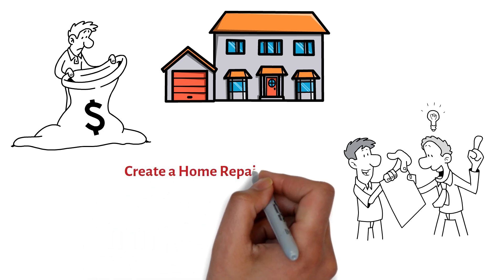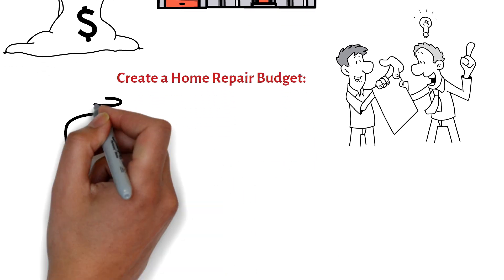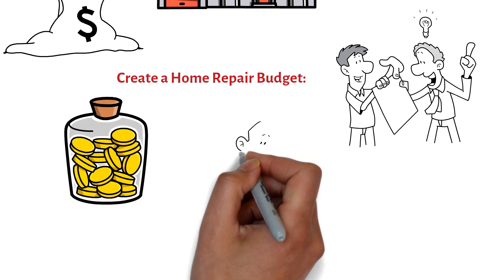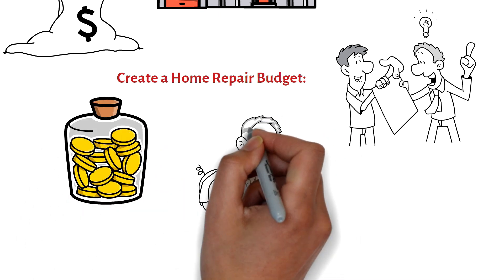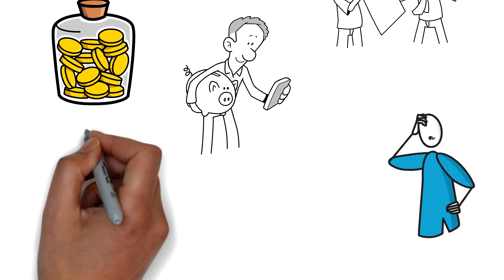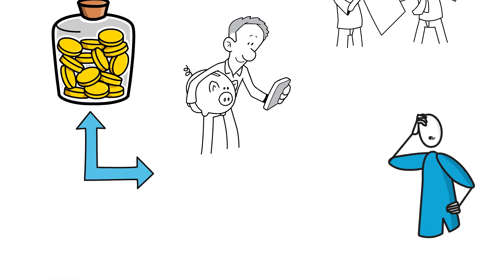Create a home repair budget. Start by establishing a separate budget specifically for home repairs and maintenance. Set aside a portion of your monthly income dedicated to addressing potential repairs or unexpected maintenance needs. Having a designated fund will help you avoid dipping into your regular savings or emergency funds.